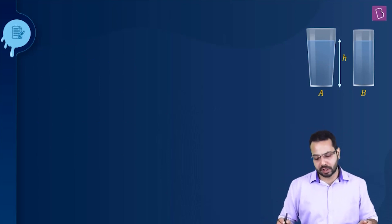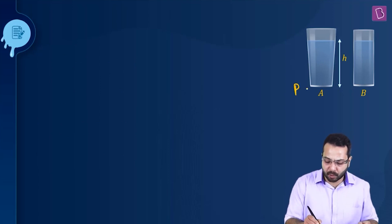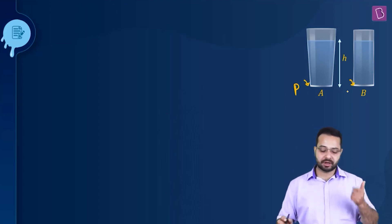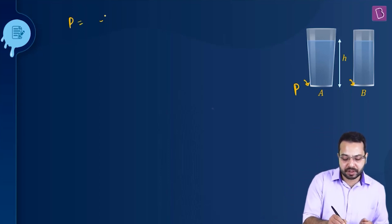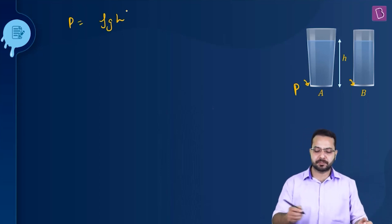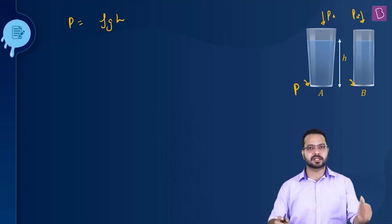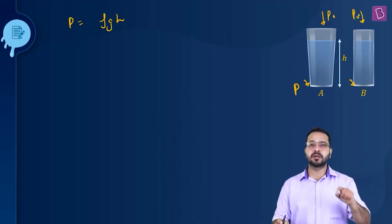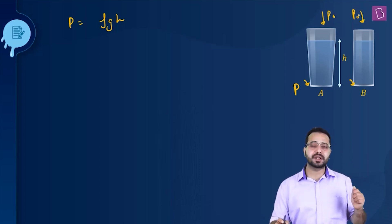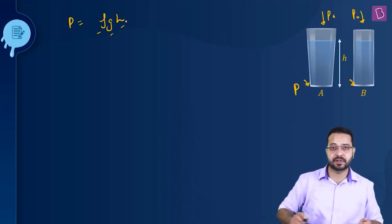If we look at these two liquid columns, the pressure at the bottom — what would that depend on? We know that pressure is going to be ρGH, and I'm talking about pressure only due to the liquid column, because on top of that the atmospheric pressure would be the same. So the pressure at the bottom is given by ρGH. It depends on the density of the liquid, acceleration due to gravity, and the height of the liquid.